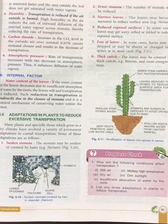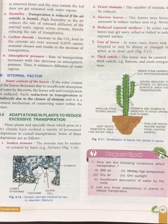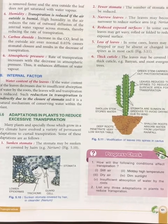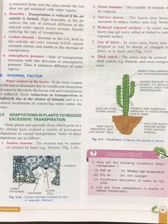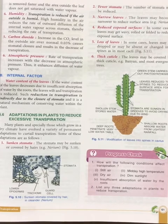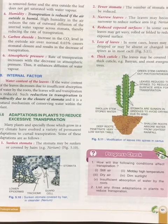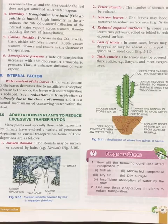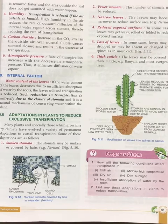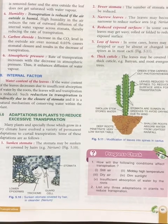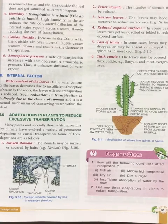List any three adaptations in plants to reduce transpiration. We have just covered: number one, sunken stomata; number two, fewer stomata; number three, narrower leaves.